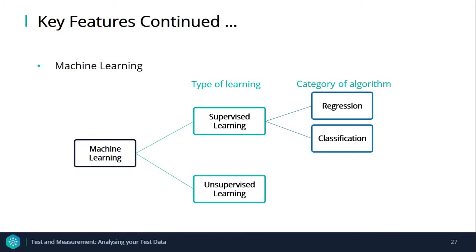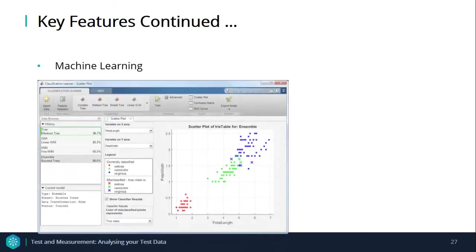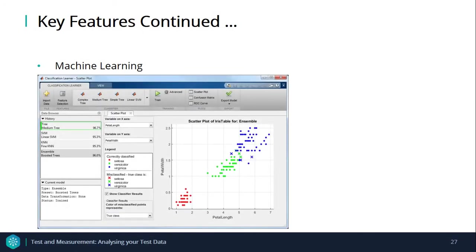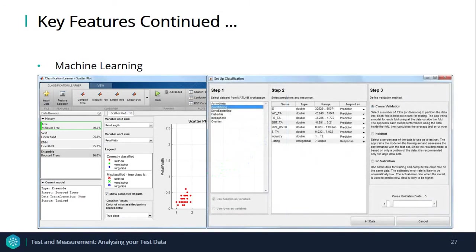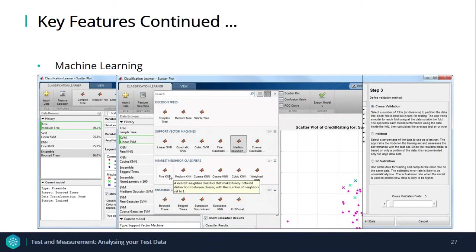Classification algorithms enable you to model a categorical response variable as a function of one or more predictors. The data can be separated into specific classes. Some of the common classification algorithms include support vector machines, neural networks, decision trees, and nearest neighbors. The Classification Learner app lets you train models to classify data using supervised machine learning.